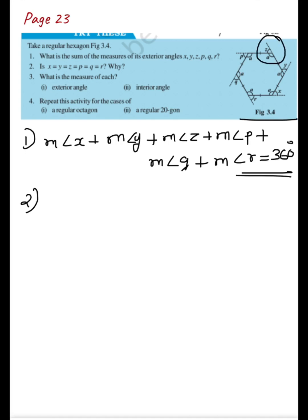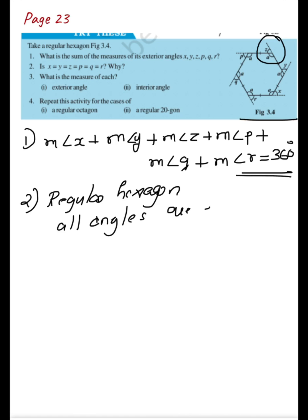Since it's a regular hexagon, all angles and all sides are equal. So all interior angles are equal — let's call each one 'a'. Since the interior angles are all equal, you can tell that the exterior angles will also be equal.